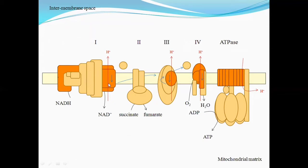When the electrons are transported by NADH and FADH2 — from oxidation of carbohydrates, fats, and proteins — NADH gives its electrons to complex one and FADH2 gives its electrons to complex two. As electrons are transported through these complexes, protons (hydrogen ions) are pumped from the matrix into the intermembrane space. When the electrons are transported, energy is released, and that energy is utilized for the transfer of protons into the intermembrane space.